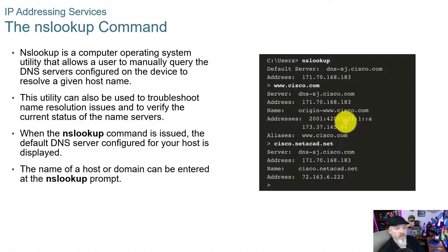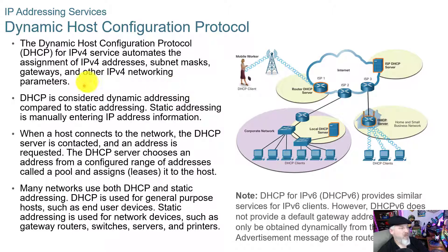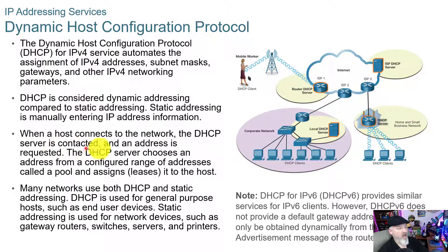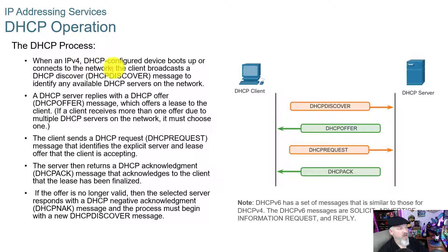DHCP for IPv4 automates the assignment of IPv4 addresses, subnet masks, gateways, and other IPv4 networking parameters. DHCP is considered dynamic addressing compared to static IP addressing — static addressing requires manually entering IP addresses on each client, while with dynamic addressing you set a pool on your server and it assigns addresses when hosts connect. When a host connects, the DHCP server is contacted, an address is requested, the server chooses an address from a configured range or pool, and assigns that IP address along with a lease time. Many networks use both DHCP and static addressing — DHCP for generic hosts and static for network devices such as gateway routers, switches, servers, or printers.